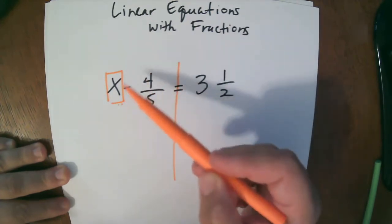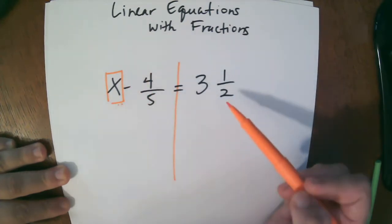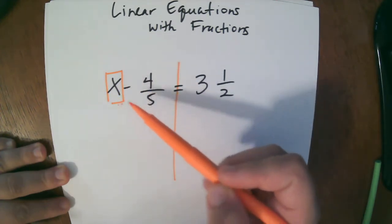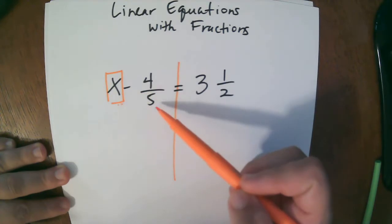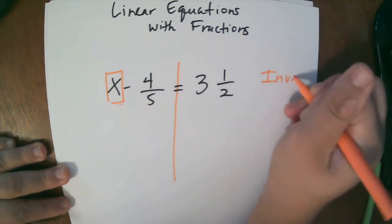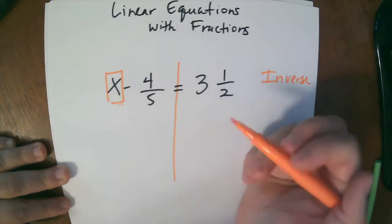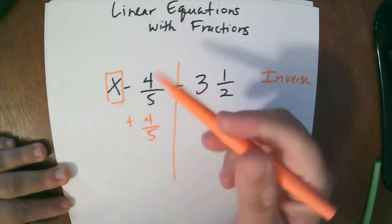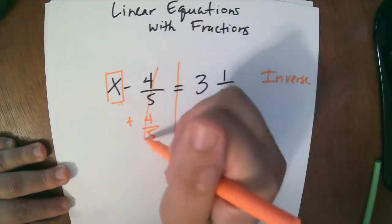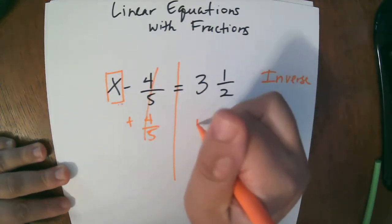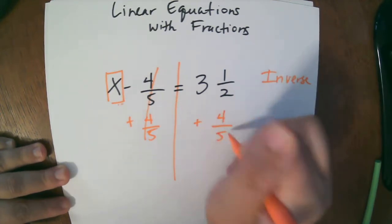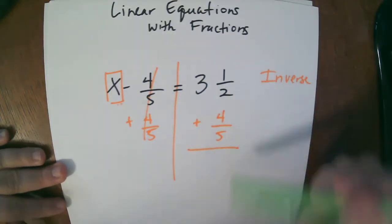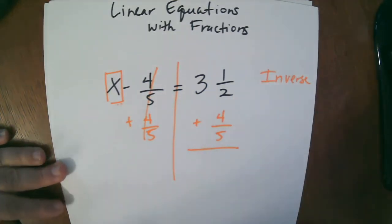So what I want to do is I want to start moving numbers over to the other side of the wall so we can get x by itself. So the first thing I'm going to move here is this negative 4 fifths and I do that by taking the inverse of negative 4 fifths. So the inverse of negative 4 fifths is positive 4 fifths. So this becomes a zero and then so now I have 3 and 1 half plus 4 fifths. So now we need to take what we know about adding fractions and so what are the rules for adding fractions?